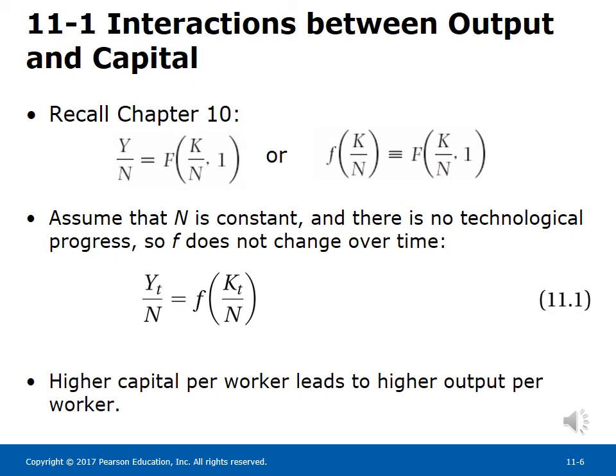The Effects of Capital on Output. In section 10-3, we studied the aggregate production function. Under the assumption of constant returns to scale, we can write the relation between output per worker and capital per worker as: y/N = f(K/N), where f represents the level of technology. Assuming N is constant and there is no technological progress, higher capital per worker leads to higher output per worker.